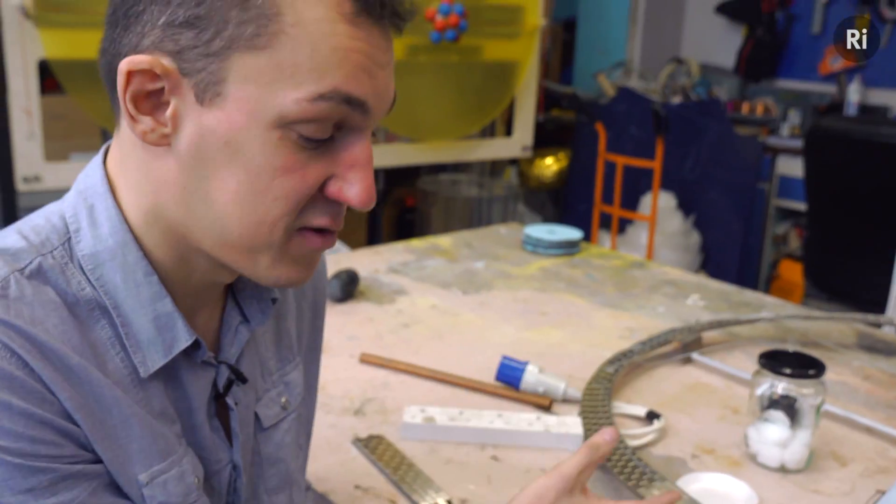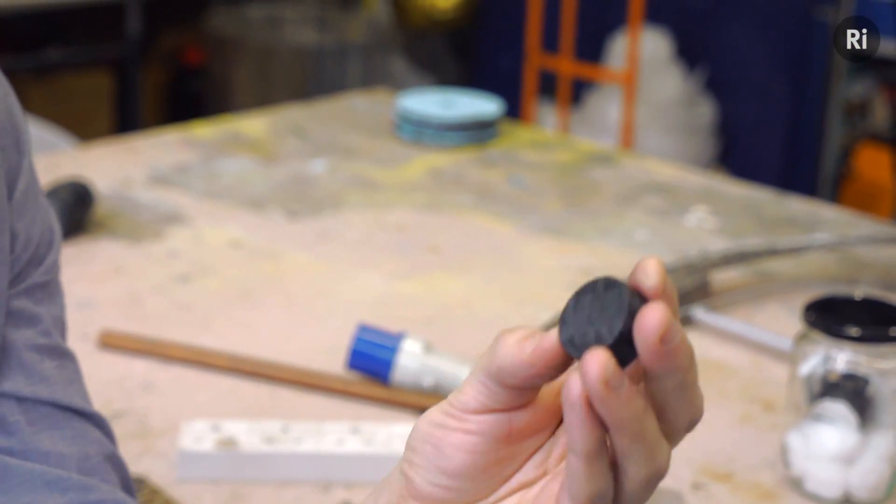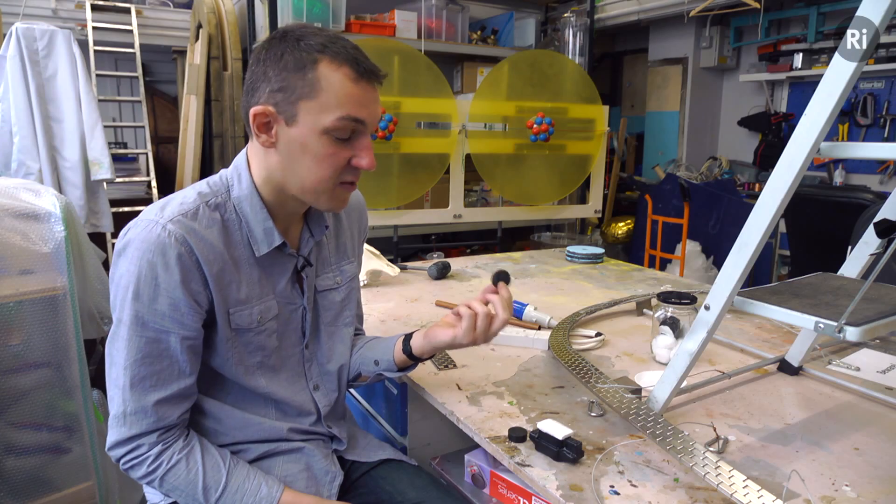What I want to show you is how this track is going to interact with one of these. This is a high-temperature superconductor made of yttrium-barium-copper oxide, a sort of ceramic material.